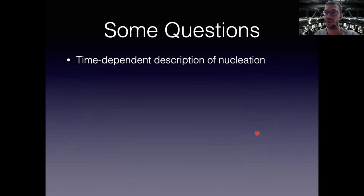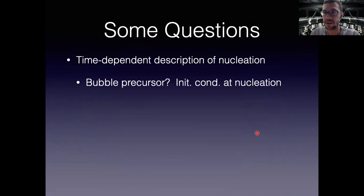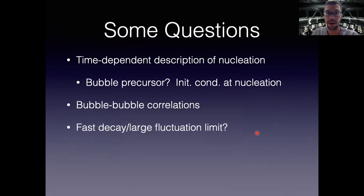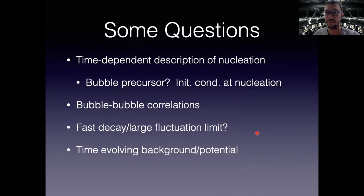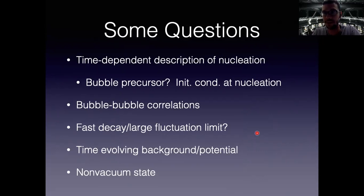This allows you to answer some questions, but plenty remain: is there actually a time-dependent description; are there bubble precursors in the field; what are the initial conditions when a bubble nucleates; are there correlations between bubbles; what happens for very fast decays with large fluctuations; what if the background or potential is time-evolving, making Euclidean rotation impossible; and what if you're decaying from a non-vacuum state?